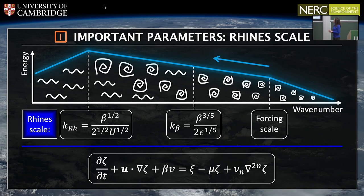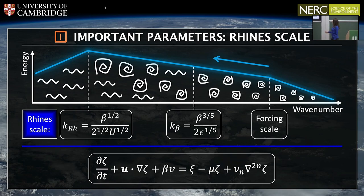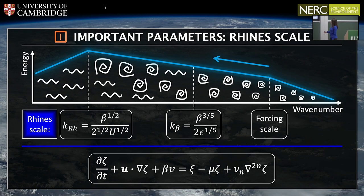Audience member: Can you say what U is? Laura: U is the typical zonal velocity. You can theoretically relate it to the parameters — some people talk about this as an emergent property, others relate it to the original parameters, but there is a theoretical relationship between U and the parameters in the system.